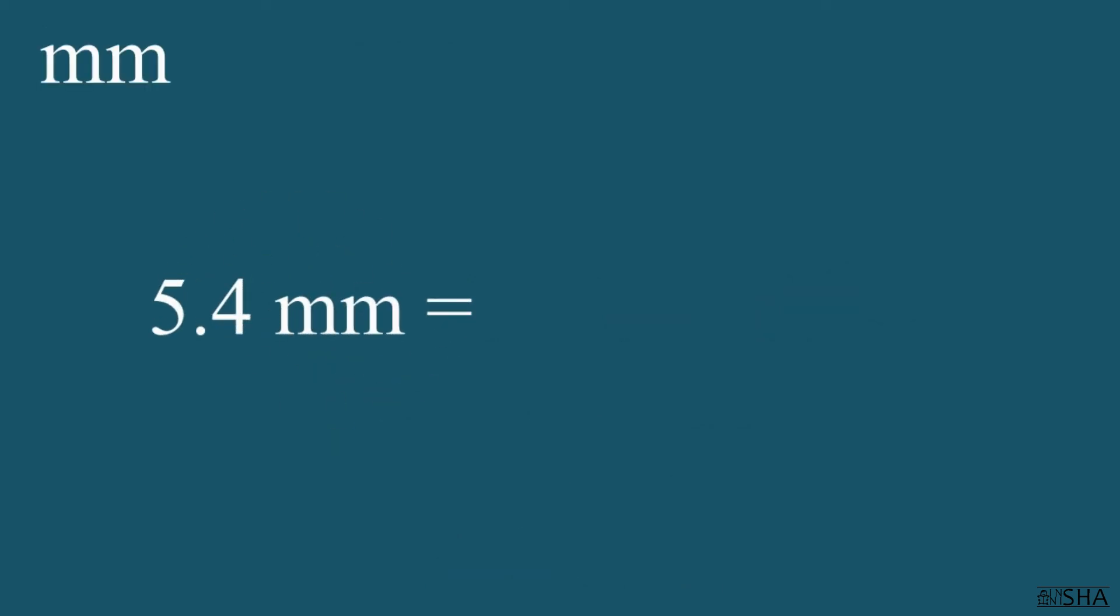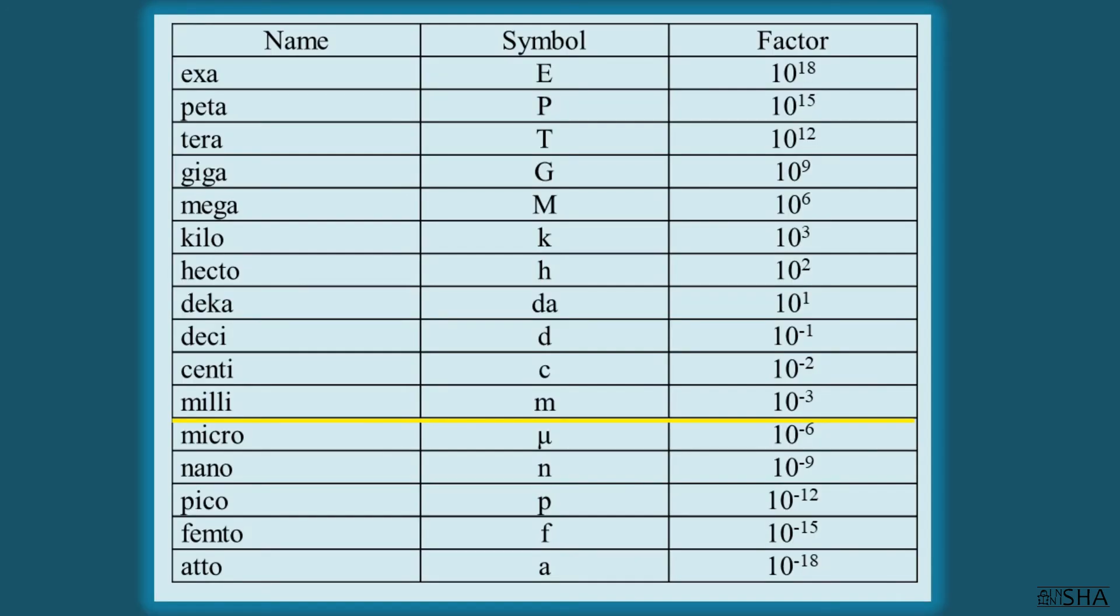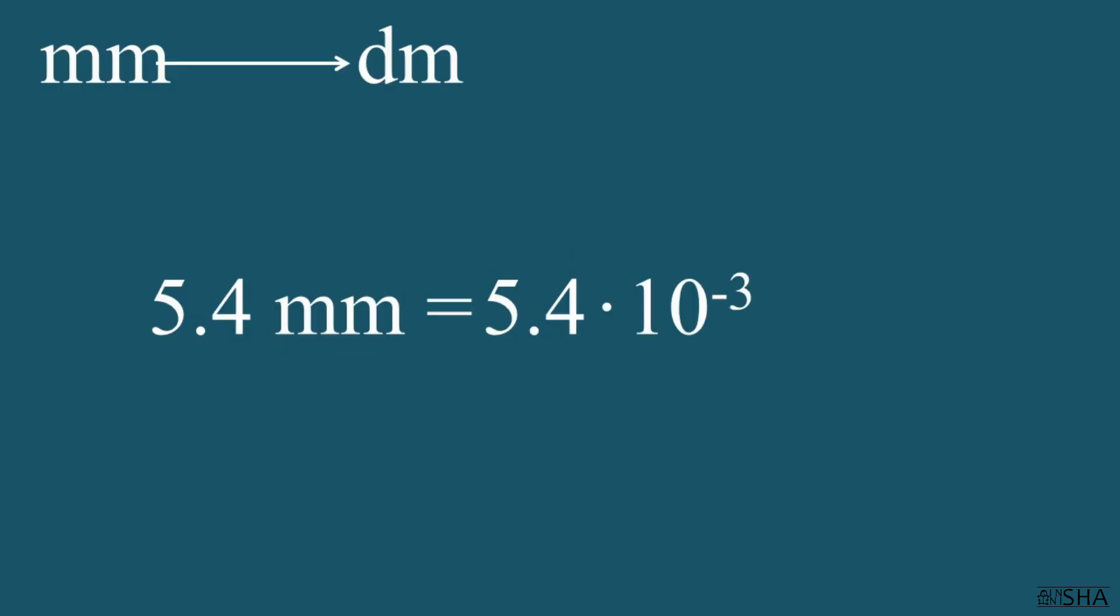5.4 millimeters we'll convert to decimeters. We leave 5.4 without changes. According to the first rule, instead of milli, we take the appropriate factor. It is ten to the negative three power. This way we get meters.